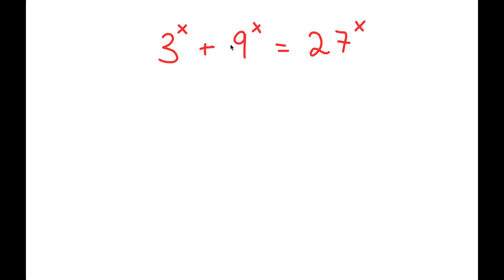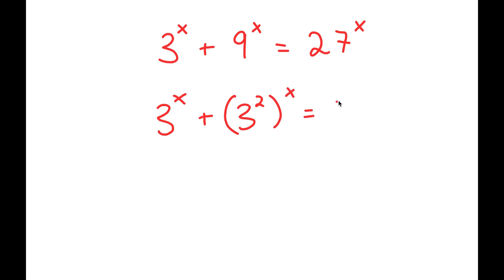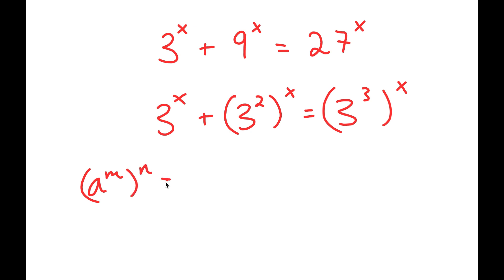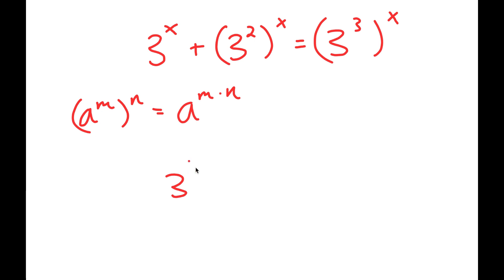To start, I'm going to rewrite this as 3 to the power of x plus 3 squared to the power of x is equal to 3 to the power of 3 to the power of x. If I have something in the form a to the power of m to the power of n, this is equal to a to the power of m times n. So this turns into 3 to the power of x plus 3 to the power of 2x plus 3 to the power of 3x.